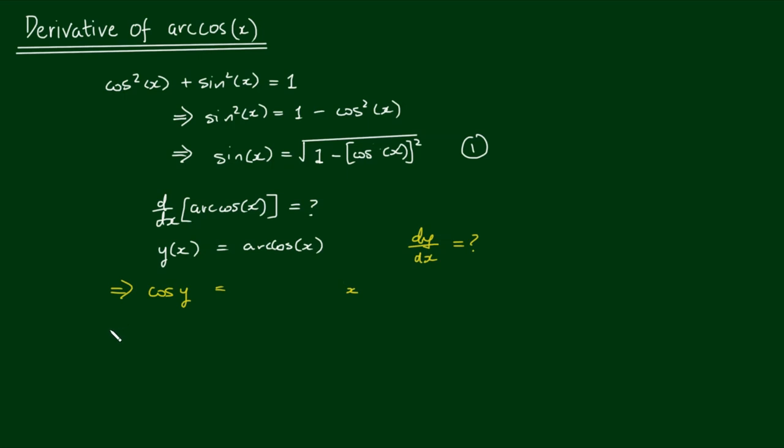Let's now take the derivative of both sides. So I have the derivative of cos(y) on the left-hand side, which equals the derivative of x with respect to x on the right. The right-hand side simply evaluates to 1.